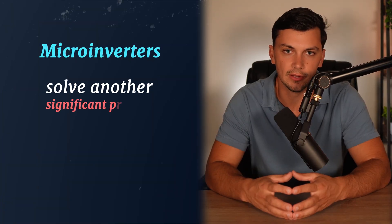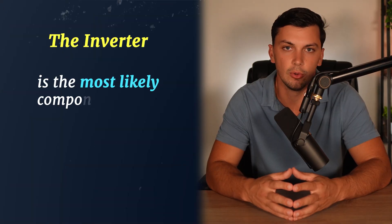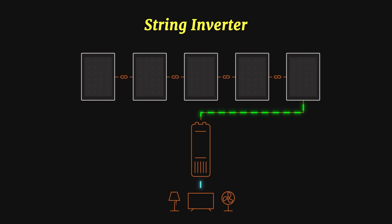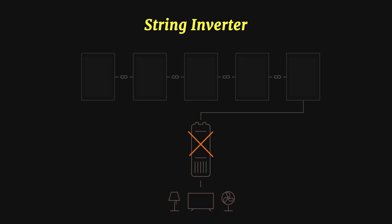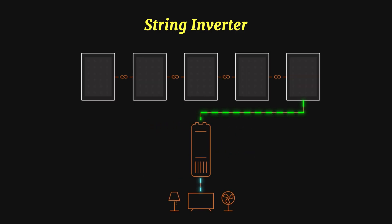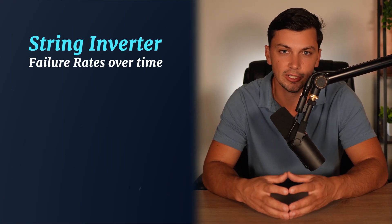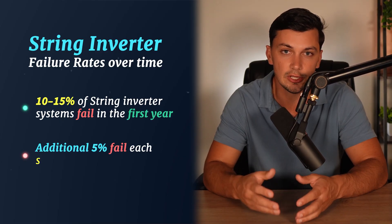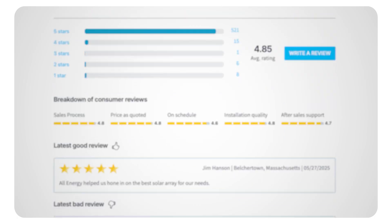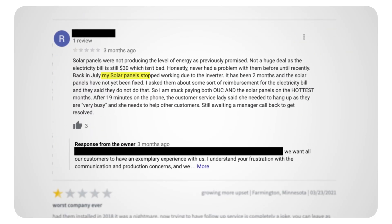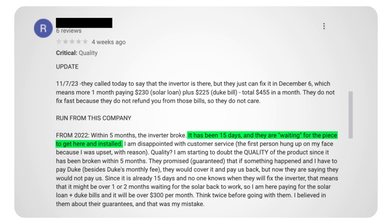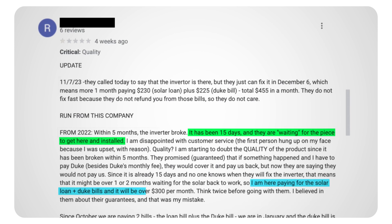Additionally, this approach solves another significant problem — a central point of failure. From all my years of working in residential solar, the inverter is the most likely component to fail within a solar system and can cause the entire system to stop producing power. This was a common frustration for homeowners with the traditional string inverter, as their solar panels couldn't produce power until that faulty inverter was replaced. On average and based on my experience, around 10 to 15% of string inverter systems fail in the first year, with an additional 5% failing each year after that. Many homeowners report waiting weeks for a replacement to be ordered and reinstalled, leaving them without solar production the entire time — which they still have to pay for.